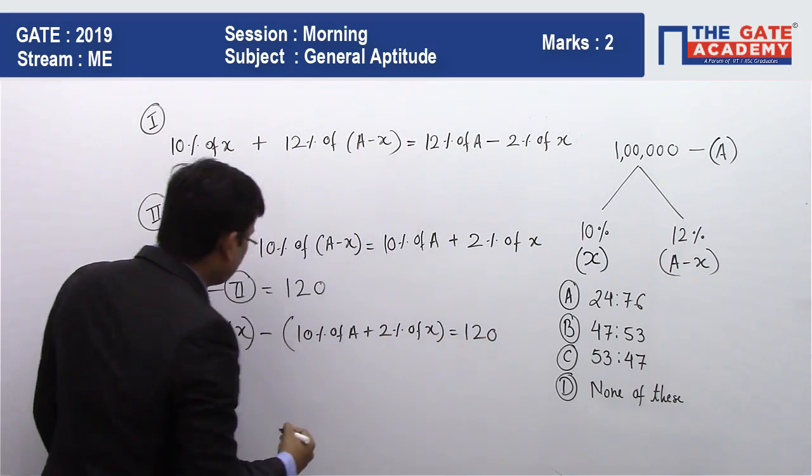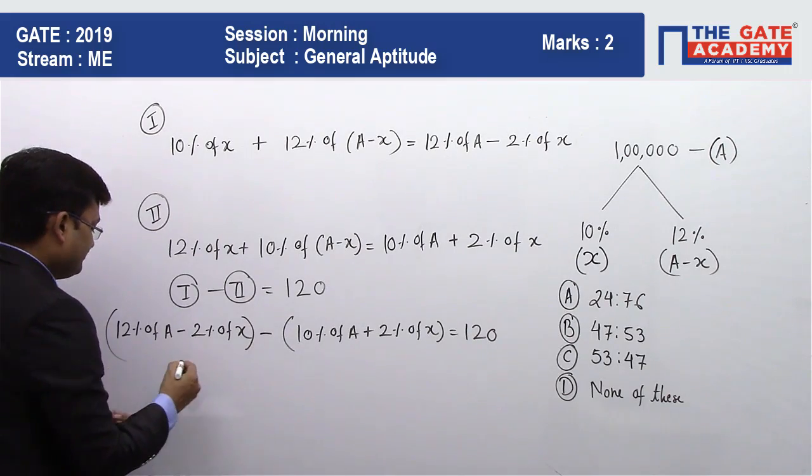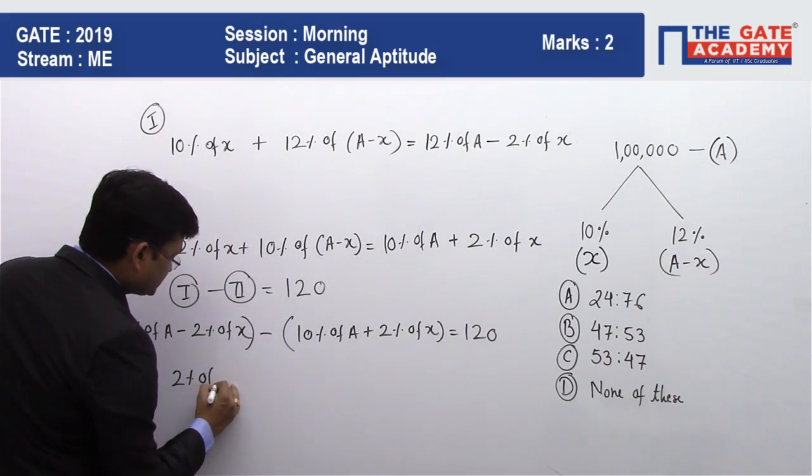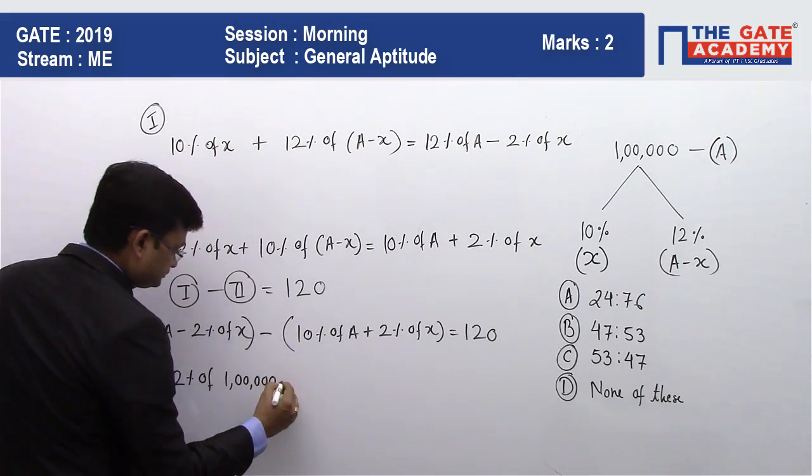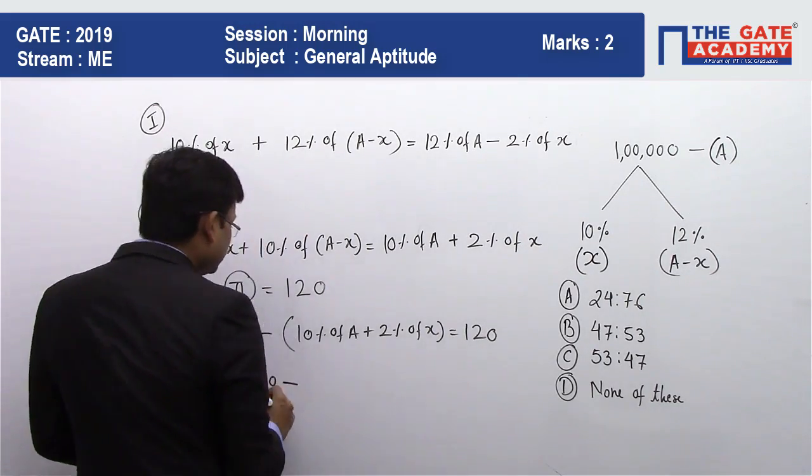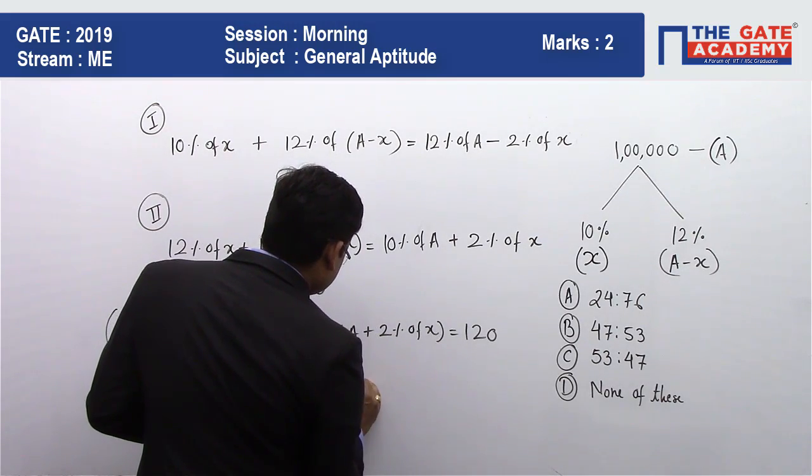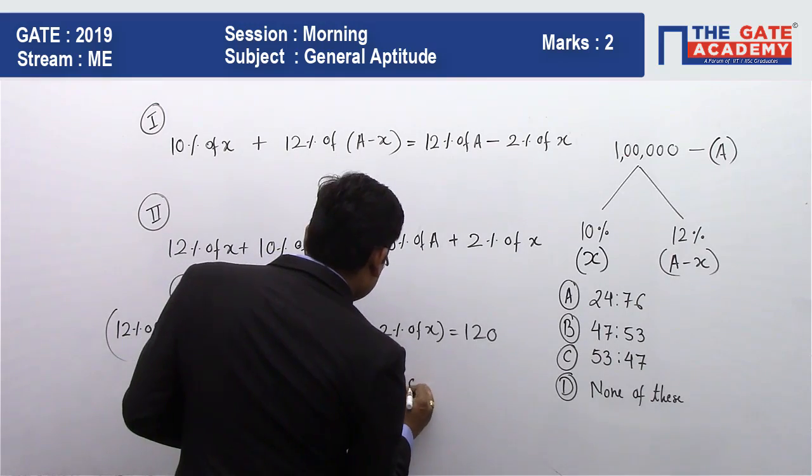Now what I'll do, I'll simplify this. When I simplify this, I'll get 2% of A, which is nothing but 1,00,000, minus 4% of X, which is 120.